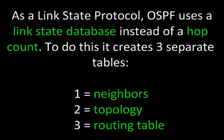As a link state protocol, OSPF uses a link state database instead of a hop count. To do this, it creates three separate tables: one for neighbors, two for topology, and three as a routing table.